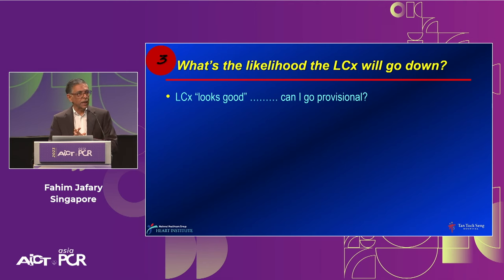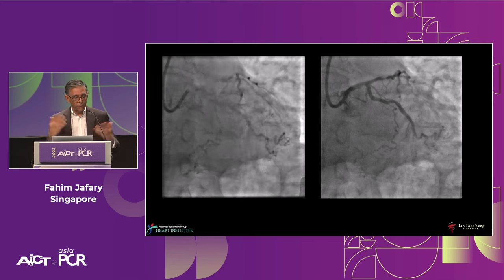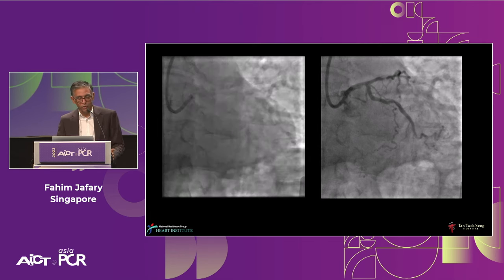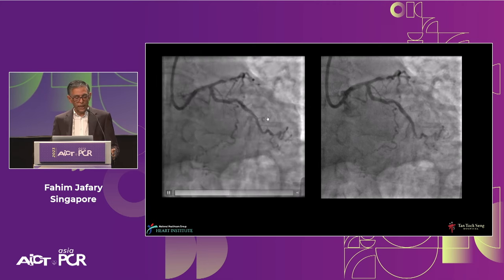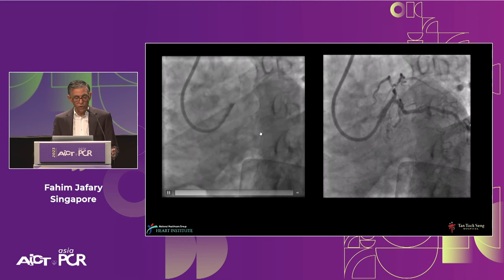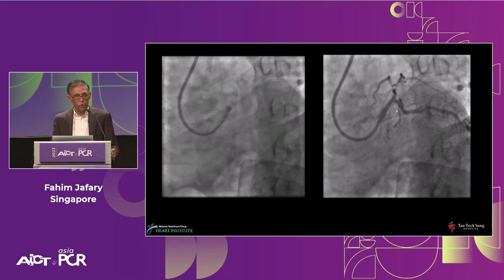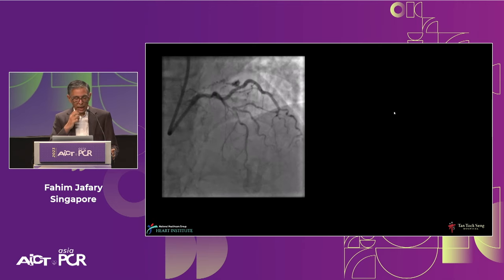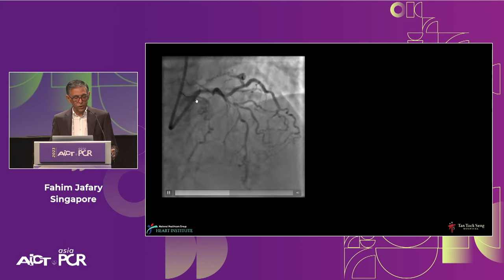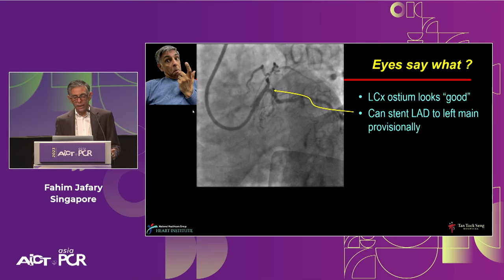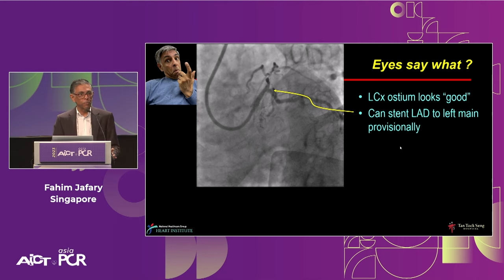A third question: what is the likelihood that the circumflex will go down? Angiographically the circumflex may look good and a provisional approach seems reasonable. Here's a man with acute coronary syndrome — distal left main disease, a critical LAD lesion, but the circumflex ostium looks pretty good on two views. The LAD is very tight and severe, collateralizing the right, with disease going all the way into the left main. My eyes say circumflex is good; I can stent from LAD to left main and use a provisional approach.